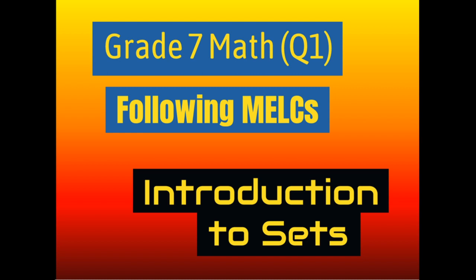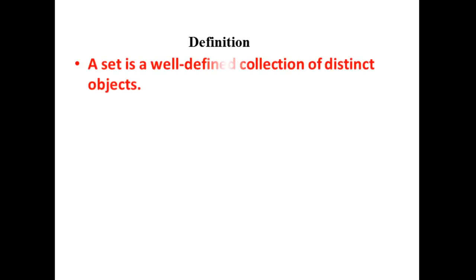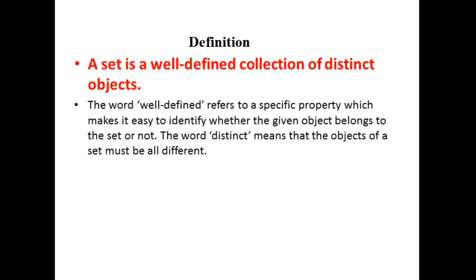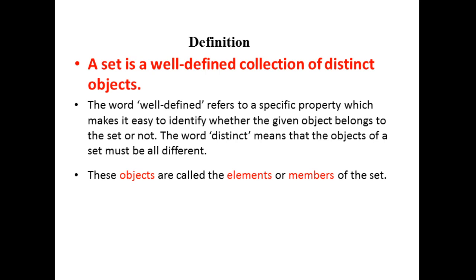First, let us define what a set is. A set is a well-defined collection of distinct objects. When we say well-defined, it refers to a specific property which makes it easy to identify whether the given object belongs to the set or not — it means those objects have something in common. The word distinct means that the objects of a set must be all different.